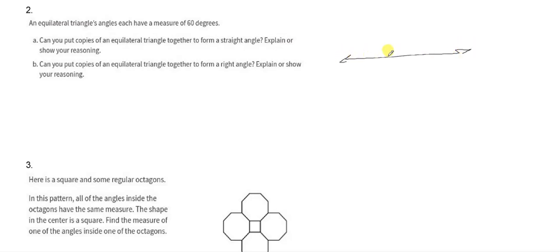If you take a straight angle and you split it up into 60, 60, and 60, that would equal 180 degrees. Because three of them perfectly make 180 degrees.